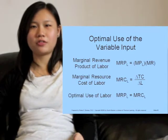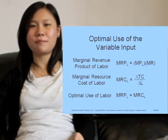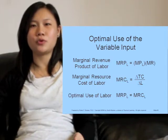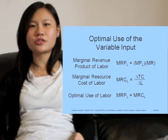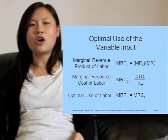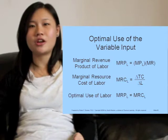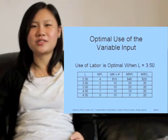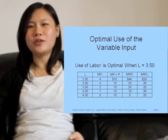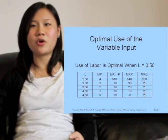The marginal revenue product of labor (MRPL) equals the marginal product of labor times the marginal revenue from the sale of the extra output produced. The marginal resource cost of labor (MRCL) is equal to the increase in total cost resulting from hiring an additional unit of labor. The optimal use of labor is reached when MRPL equals MRCL, which is when the labor is 3.5 units, maximizing the firm's profits.